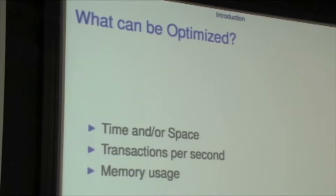What are the kinds of things we can optimize? This will tell us what we would use something like this subsystem for. You can optimize time and/or space. For the most part, the HWPMC driver will help you optimize time as opposed to space. Time can be measured in transactions per second, space in the amount of memory you use.